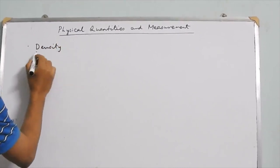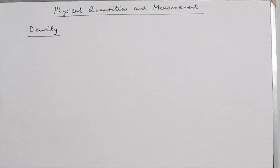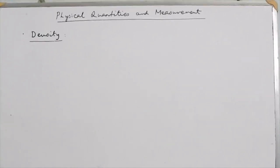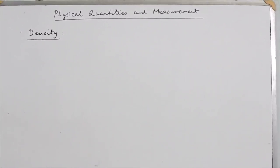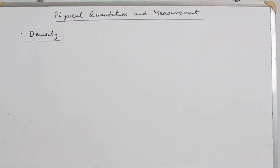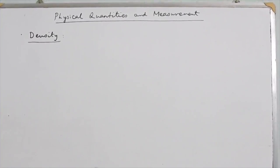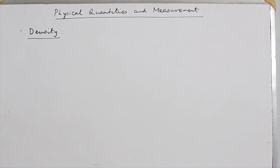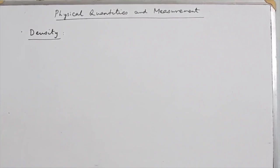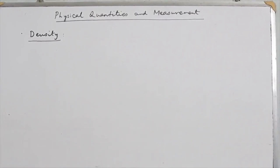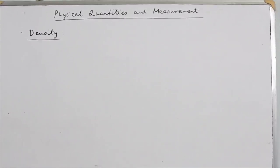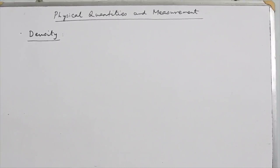Before discussing what density actually is, each object or body has a certain mass and occupies a certain volume. If the mass of a body is increased, its volume will obviously increase, and similarly if the volume increases, the mass will also increase. But what we realize from our observations is that equal volumes of different substances might have different masses, whereas equal masses of different substances might have different volumes.